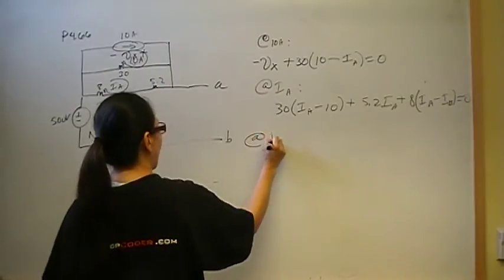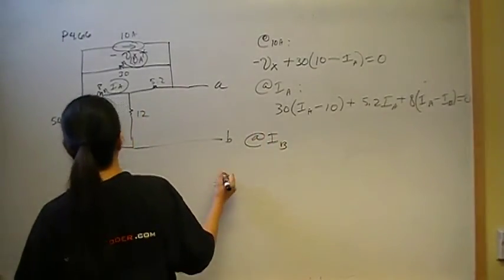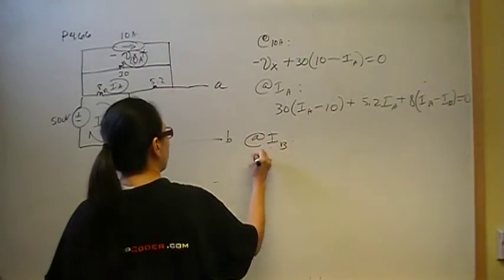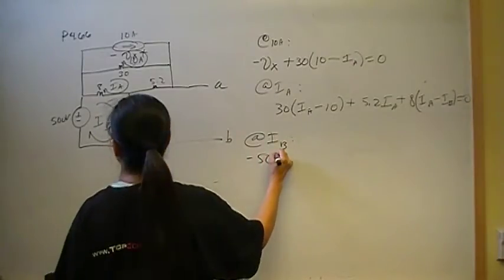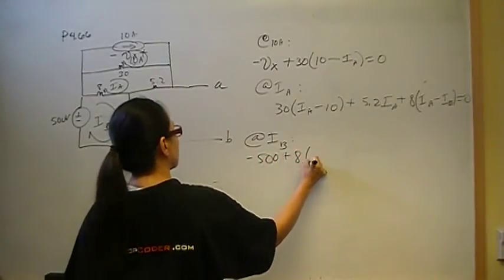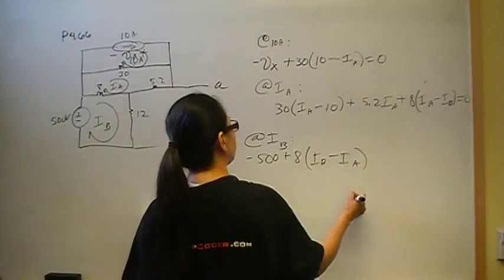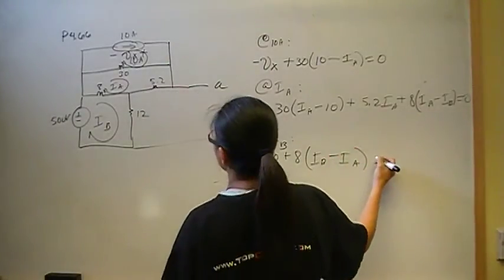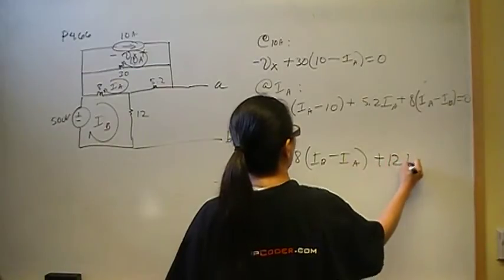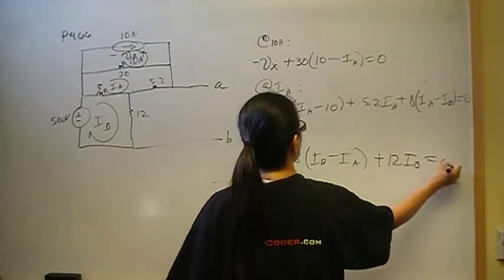And then mesh at I-B is going to be minus 500 plus 8 times I-B minus I-A. And that's going to be plus 12 I-B is equal to zero.